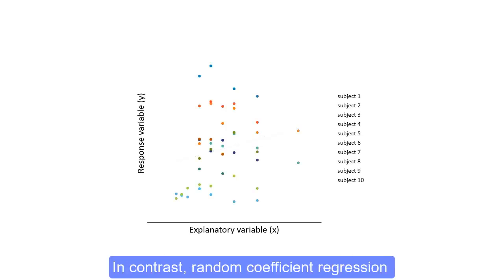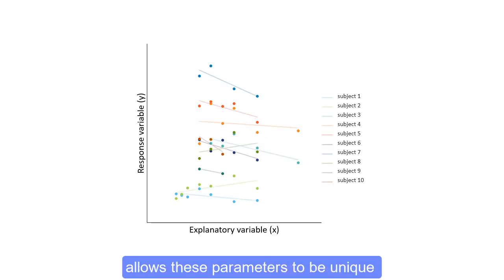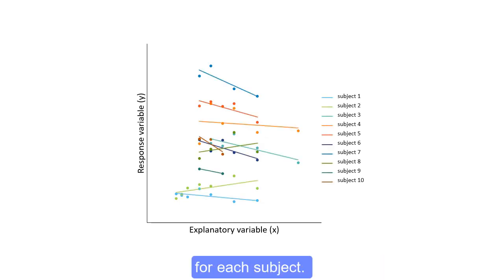In contrast, random coefficient regression allows these parameters to be unique for each subject.